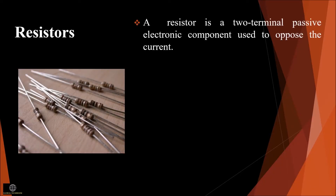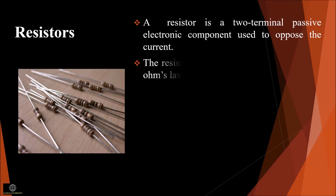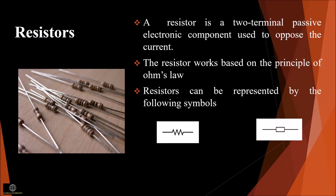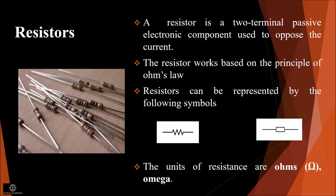A resistor is a two-terminal passive electronic component used to oppose the current. It is the component commonly used in electronic circuits and devices. A resistor is used to maintain specified values of voltage and current in an electronic circuit. The resistor works based on the principle of Ohm's law, which states that the voltage across the terminals of the resistor is directly proportional to the current flowing through it. The unit of resistance is Ohms.